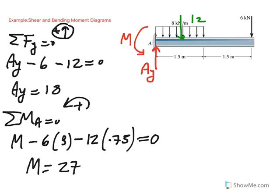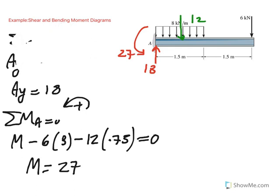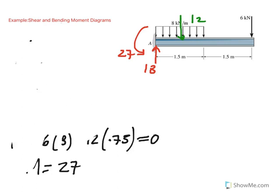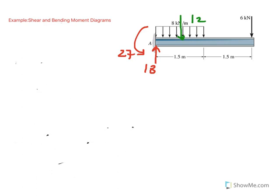So now that we found these reactions, let me go ahead and put their values here. I'll put the value of the force reaction of 18 and the moment reaction of 27. That's the first thing we have to do always: figure out the reactions. Now we are ready to draw the shear bending moment diagram. We'll change that distributed load to a concentrated load for the sake of finding the external reaction.